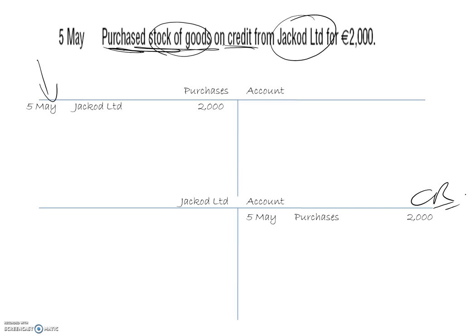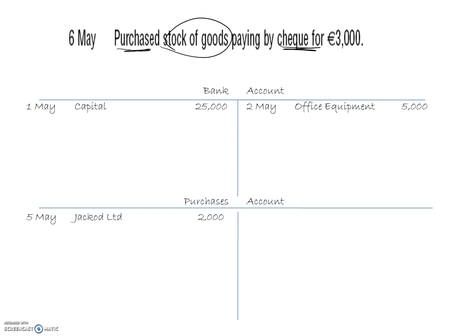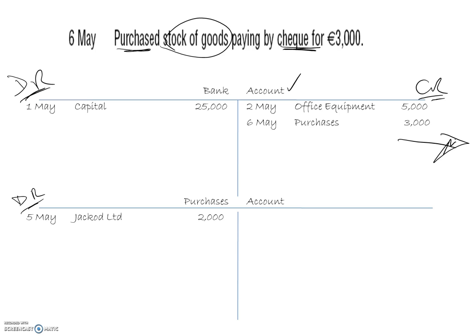6th of May: purchased stock of goods paying by cheque for 3,000. Buying goods for resale is a purchases account, and paying by cheque means the money came out of the bank. We already have both a purchases account and a bank account — if you already have the accounts you don't open up new ones. Money going out of the bank is always on the credit side: 6th of May, purchases, 3,000 on the credit side of bank; and we debit the purchases account.